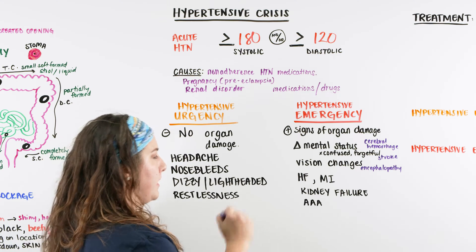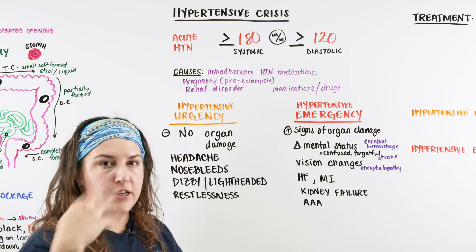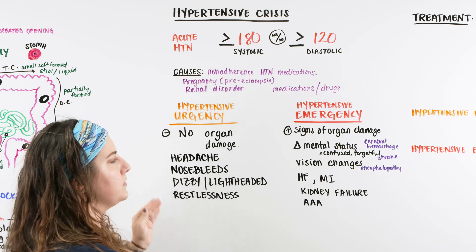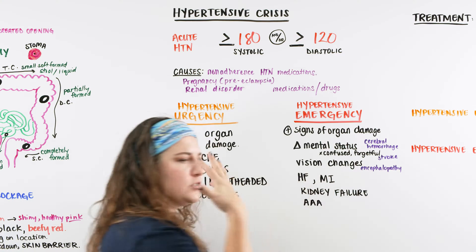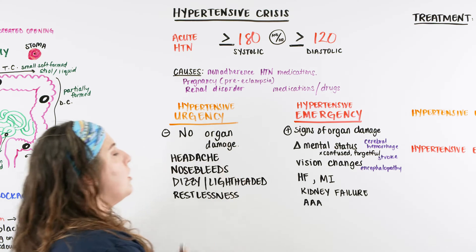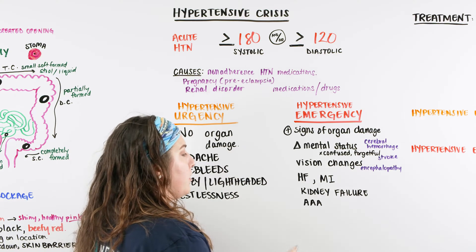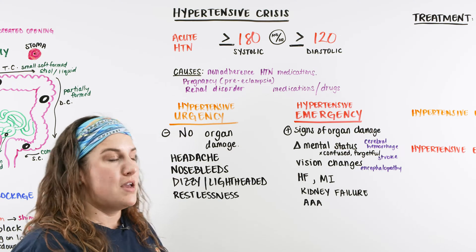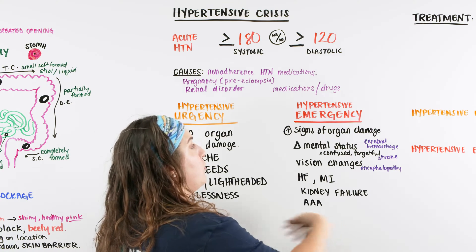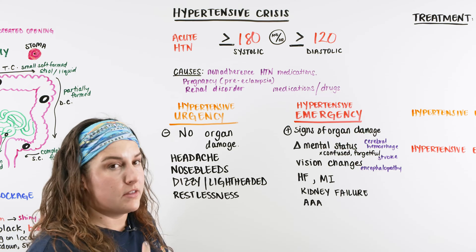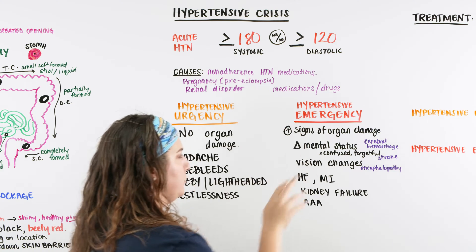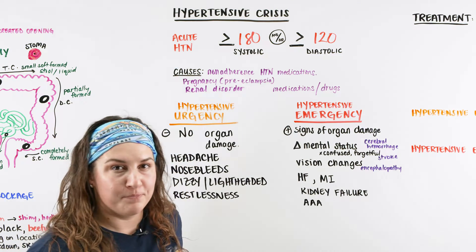A patient might come in saying they have a nosebleed, can't sleep, and now their vision is changing. Or they may present with back and abdominal pain, and when you take their blood pressure you realize something serious is happening. This is when you order blood work and begin working toward a treatment plan. Understanding how the patient presents helps guide whether this is urgency or emergency.